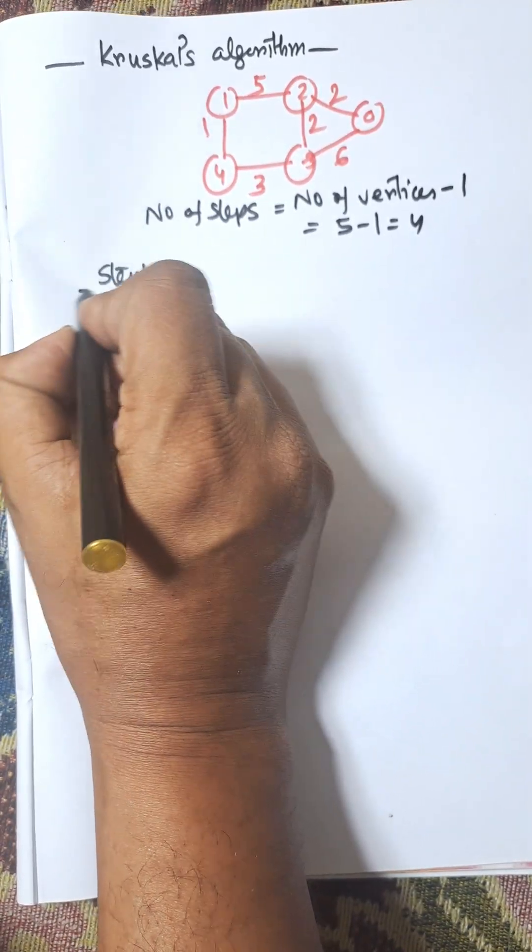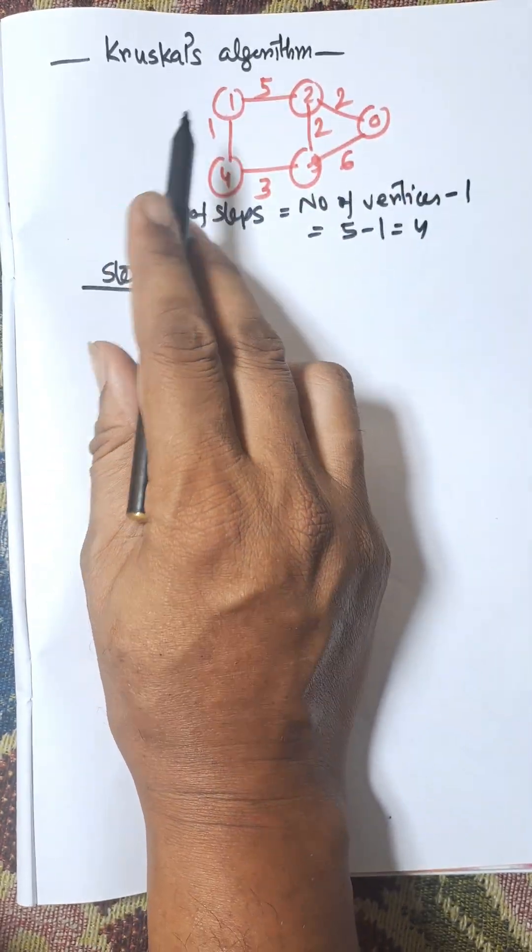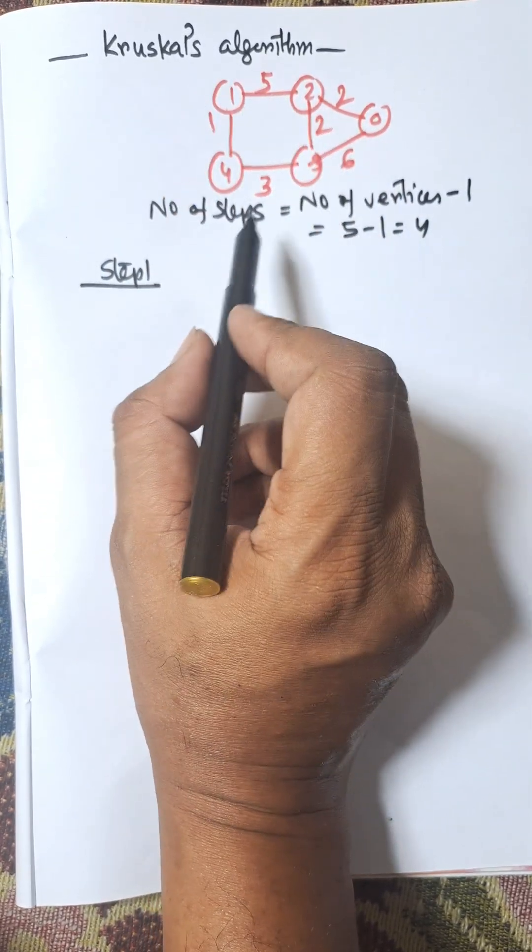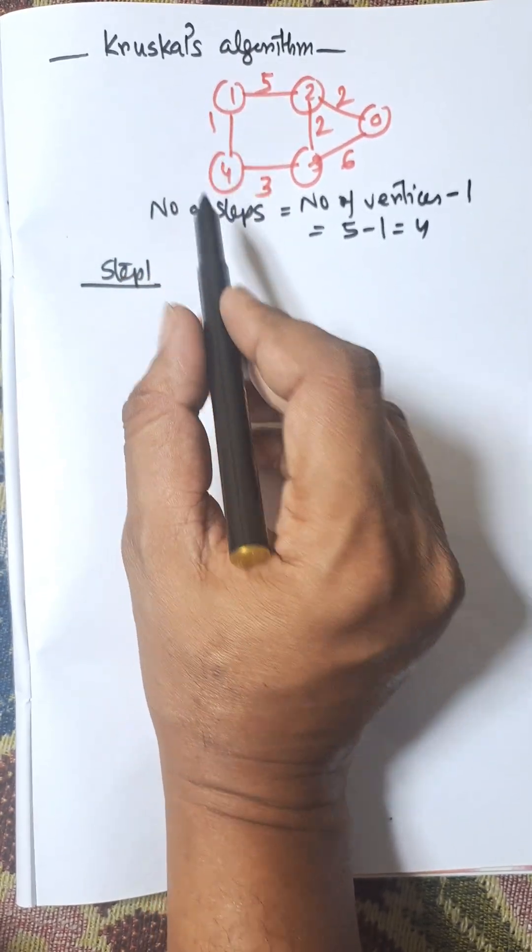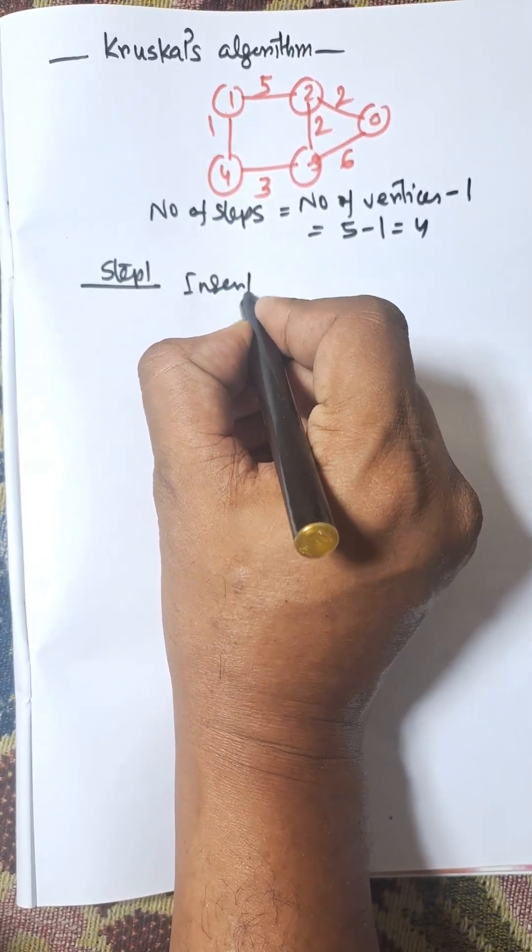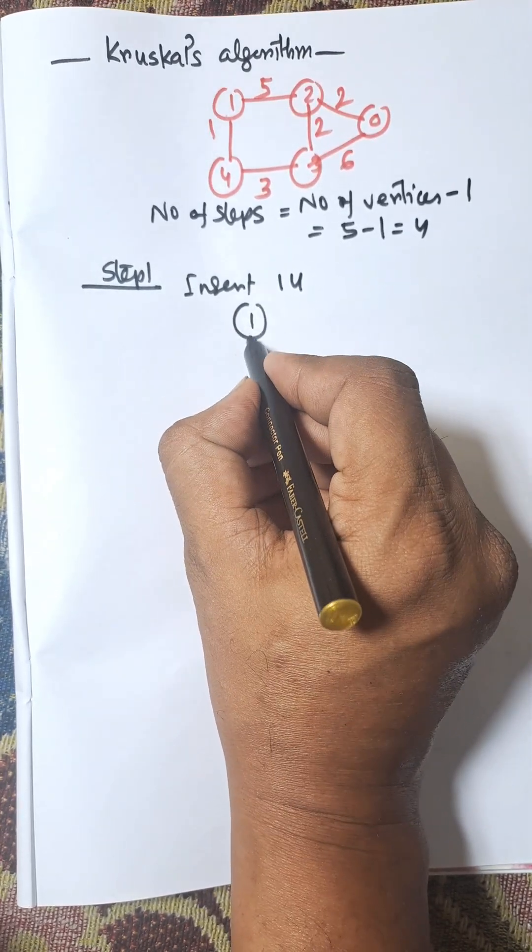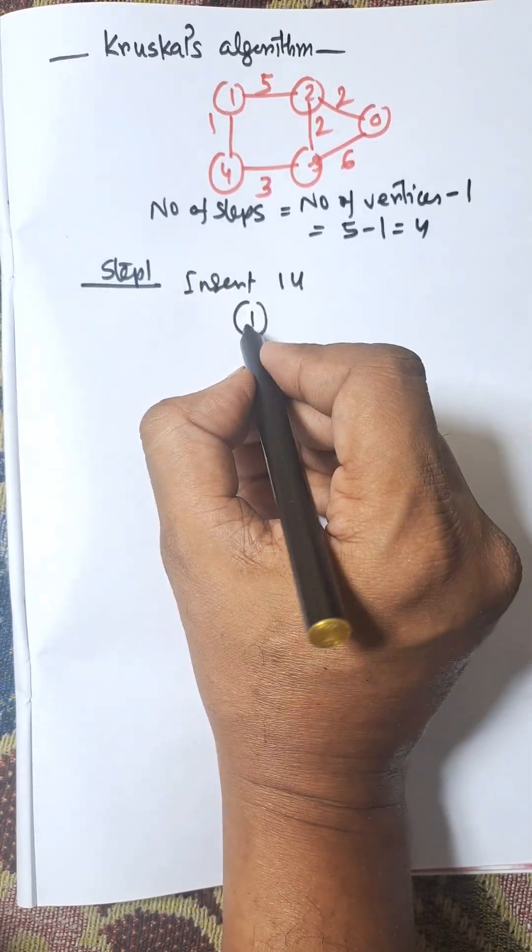Step 1: We need to select the minimum cost edge from all the edges of the graph. Here, the minimum cost is 1. Edge 1 and 4 is selected with cost 1.